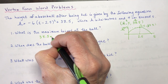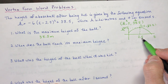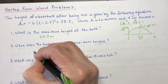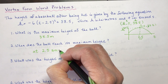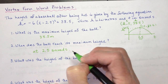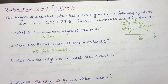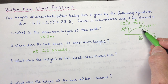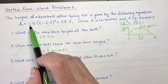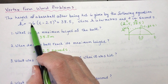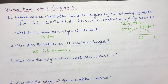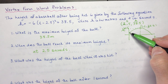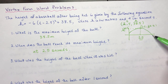That happens at 2.5 seconds — already two marks showing understanding of what a vertex is: it's a maximum. You should also note that the coefficient in the vertex form is negative, which makes sense — the ball doesn't go concave up, it's a concave down shape. So it goes up, hits maximum height, and comes back down. Projectiles generally go up and then come down due to gravity.